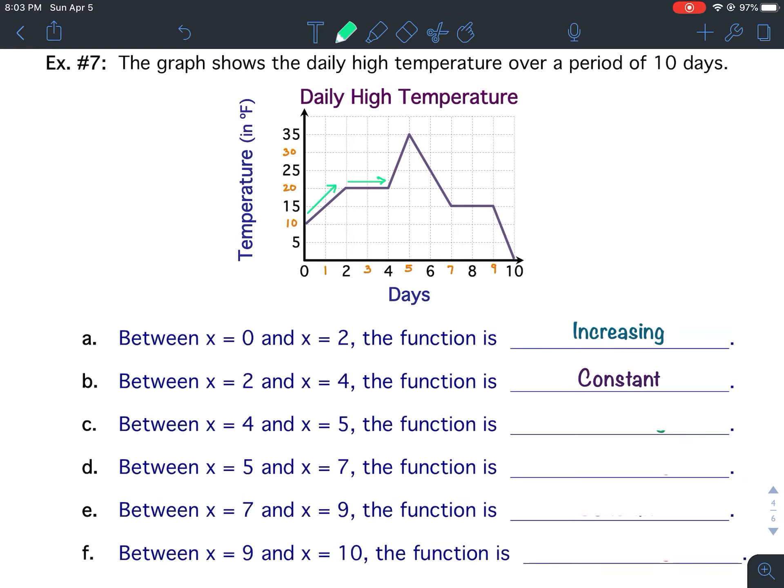From x equals 4 to x equals 5, or day 4 to day 5. The temperature went up, so it increased. The function is increasing from x equals 4 to x equals 5.